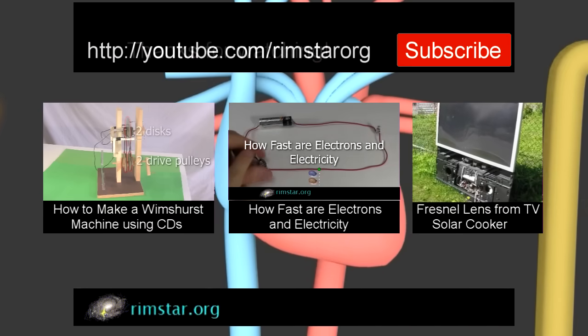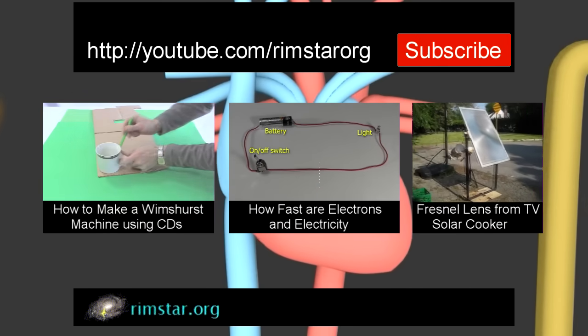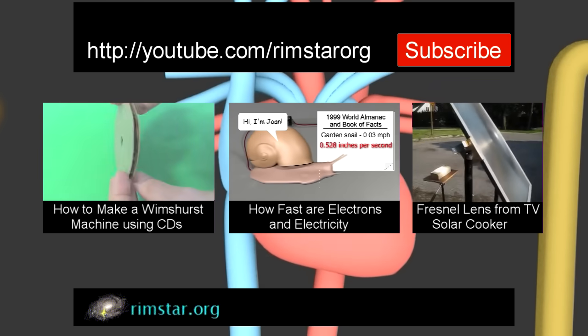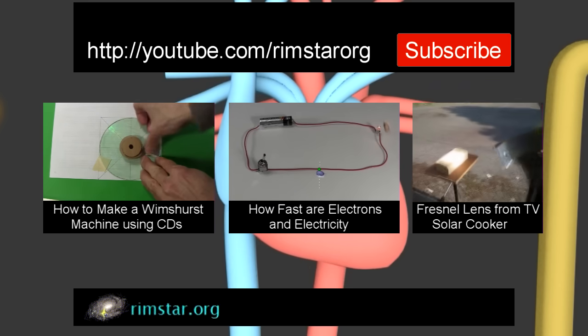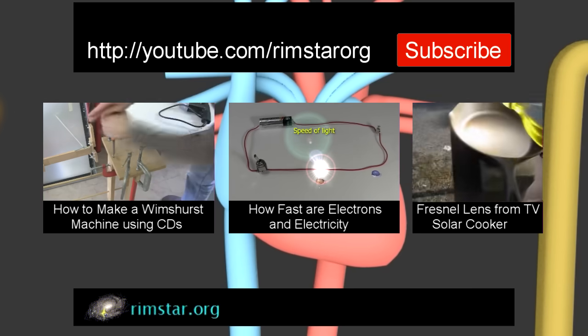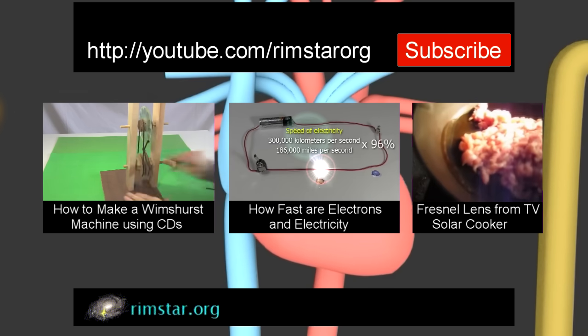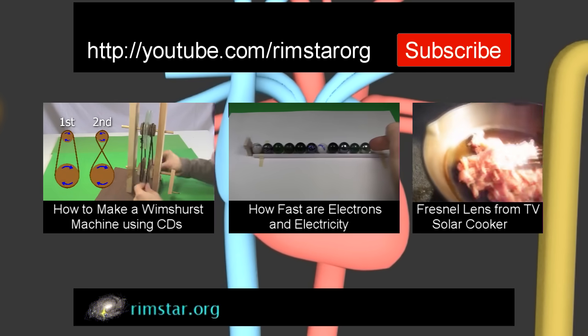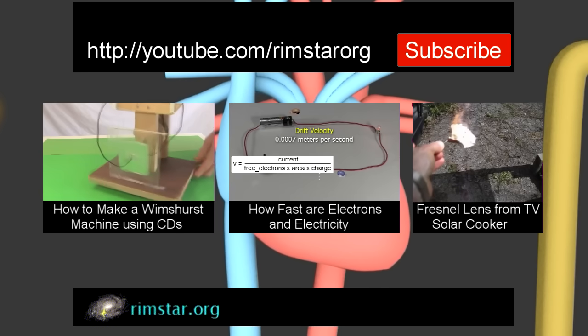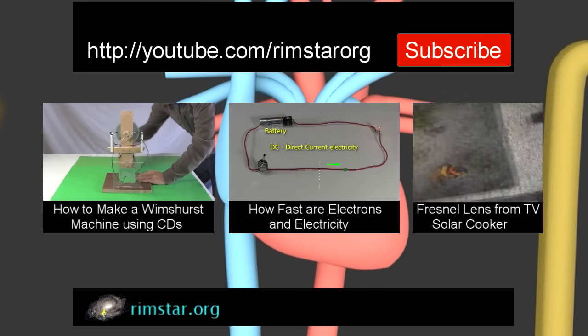Well, thanks for watching. See my YouTube channel, Rimstar Org, for more informative videos like this. That includes one on how to make the homemade Wimshurst machine I showed, another on how fast an electron or electricity flow down a wire, and for a variety, one on how to use a Fresnel lens from a rear projection TV as a solar cooker, or just have fun burning stuff. And don't forget to subscribe if you like these videos, or give a thumbs up or leave a question or comment below.